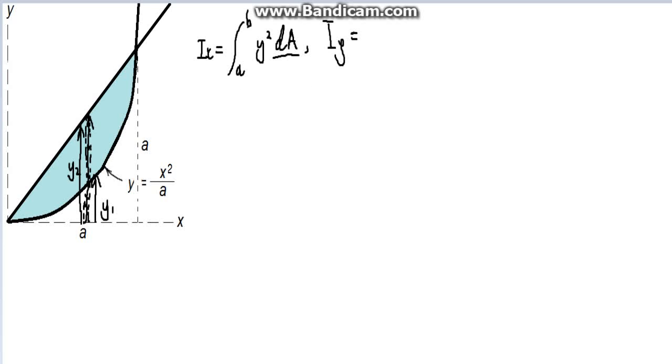Moving on, the next one, Iy, is the integral between two limits A and B, x squared. This time it's x squared, so remember what x was from previous videos. It's simply this distance, it's just x, nothing else.